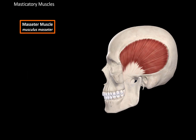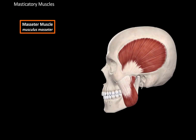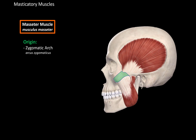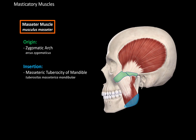Next we have the masseter muscle. If you look closely, you'll see it consists of a superficial part and a deep part, but they both originate from the zygomatic arch — the superficial part from the anterior portion and the deep part from the posterior portion. The fibers then insert at the masseteric tuberosity of the mandible, and when these fibers contract, they elevate the mandible.